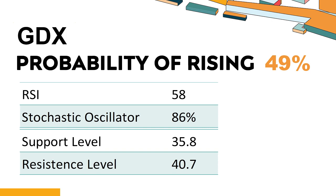The current stochastic oscillator of GDX is 86%. When the stochastic oscillator rises above the 80 level, it is typically considered overbought, suggesting that the stock may be due for a price pullback. An overbought condition occurs when a stock's price rises too quickly and too high in a short period of time and can be a sign that buying pressure has been exhausted.